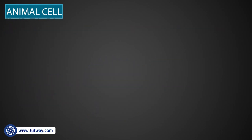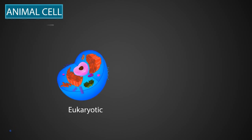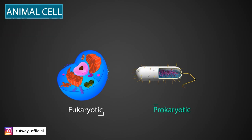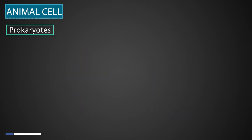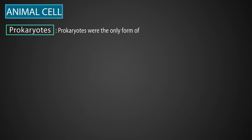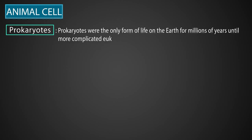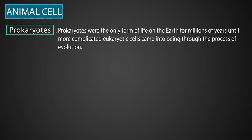All types of cells are either eukaryotic or prokaryotic. Prokaryotes, or the prokaryotic cells, were the only form of life on Earth for millions of years, until more complicated eukaryotic cells came into being through the process of evolution.